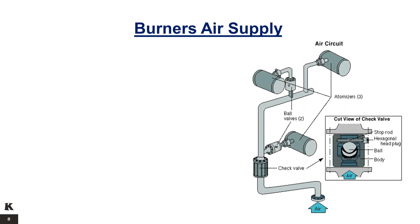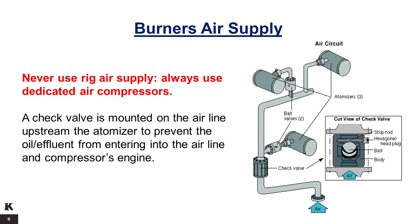Burners Air Supply. Never use rig air supply to supply the burner. Always use dedicated air compressors with enough air capacity. Generally, two compressors are used as backups for continuous burning operation. A check valve is mounted on the air line, upstream of the atomizer, to prevent the oil or effluent from entering into the air line and compressor's engine.